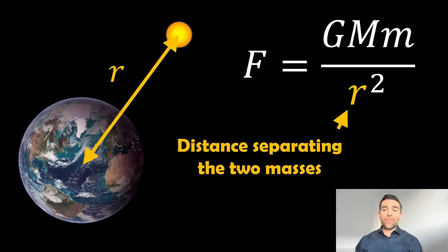So R in this equation, the R squared at the bottom relates to the distance that separates the two objects, the two masses. Depending on how far apart they are, we then put this into our equation as well. It's not just their masses, but also how far apart they're separated.